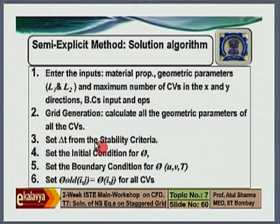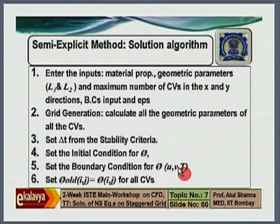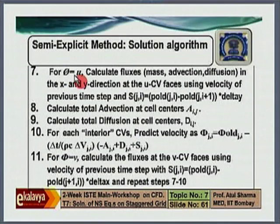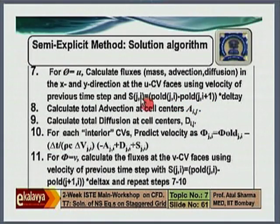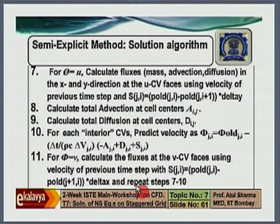I discuss this in detail in the chapter on computational heat convection. Set the initial condition for phi — u velocity, v velocity, and temperature. Set the boundary condition. When you go for the next computation, set the value as the old value. First, taking phi as u, there will be one subroutine for advection flux and diffusion flux. You send phi equals u, gamma equals dynamic viscosity, c equals 1. Calculate fluxes in x and y directions using velocity of the previous time level. Calculate the total force acting in the x direction — the source term. Calculate total advection, total diffusion, and predict u velocity. Similarly, do for v velocity by repeating those steps.